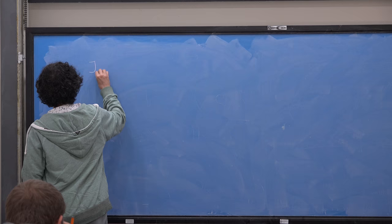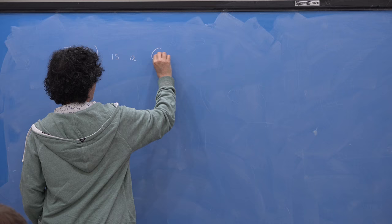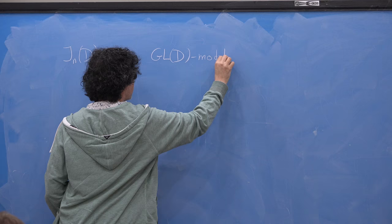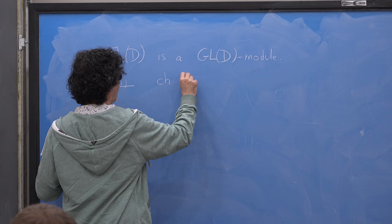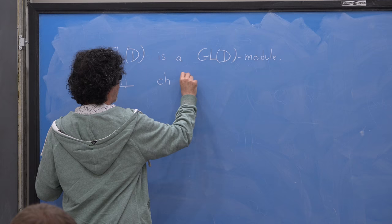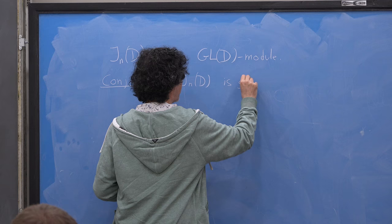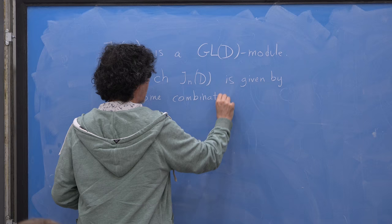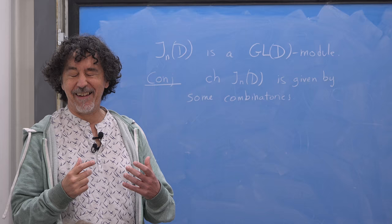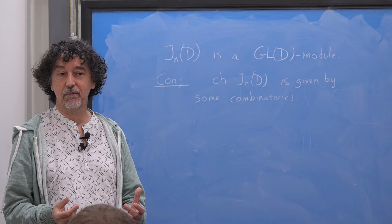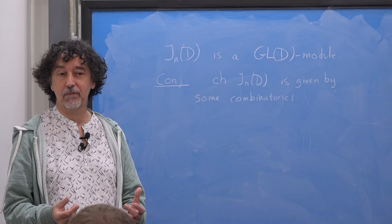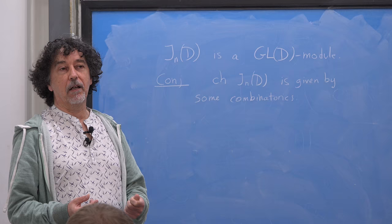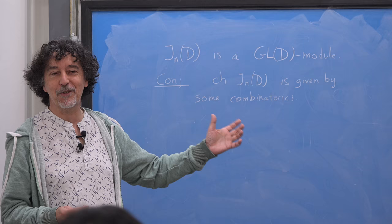Depending on your taste, you can assume that the Jordan algebra is with a unit or not. Here, to simplify, I will use a non-unital Jordan algebra but it's not a big deal. G_N of D is a GL(D) module, of course. The conjecture I will state is that the character of G_N of D is given by some combinatorics. But to simplify, in my talk I will not speak about G_N of D as a GL(D) module — I will just speak about the dimension, and I will give a precise statement about the dimension.